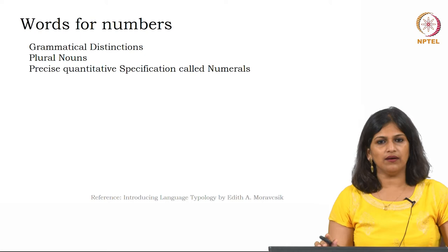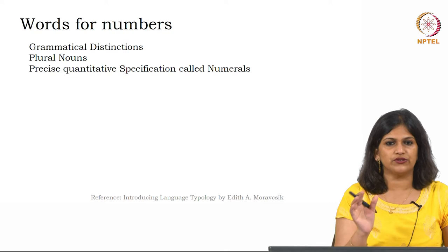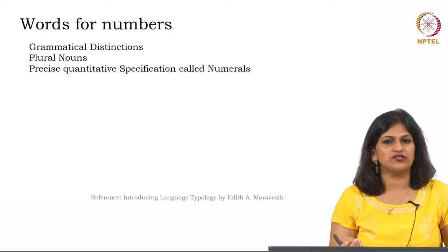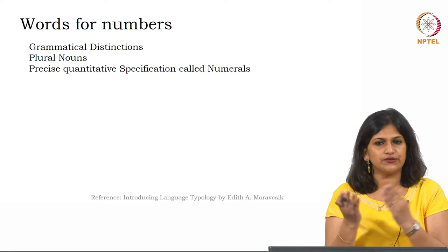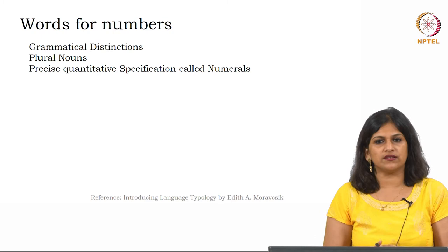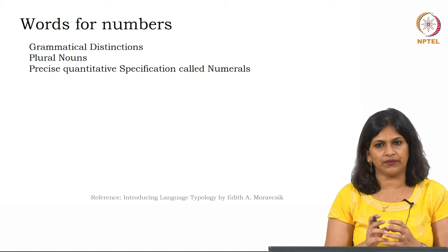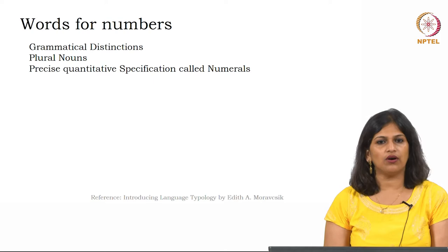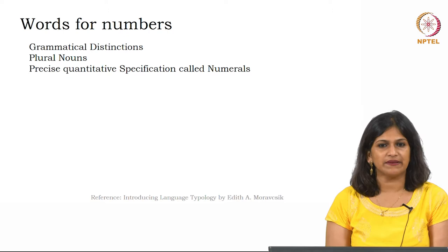We are going to figure out grammatical number — the number distinction like 1, 2, 3, 4. Do these kinds of distinctions provide quantitative information about entities, or when we say singular versus plural? We are focusing on quantitative entities and what typological generalizations we can draw. Almost all languages have special words for more precise quantitative specification — these are called numerals.